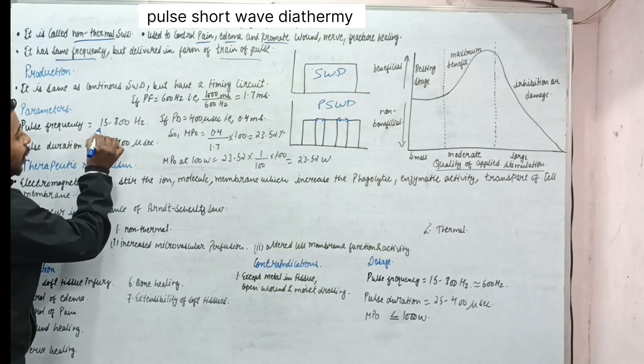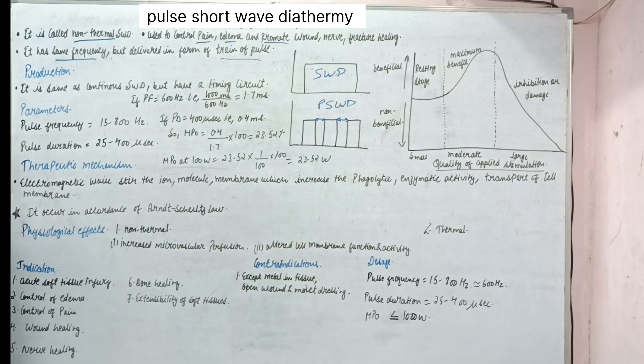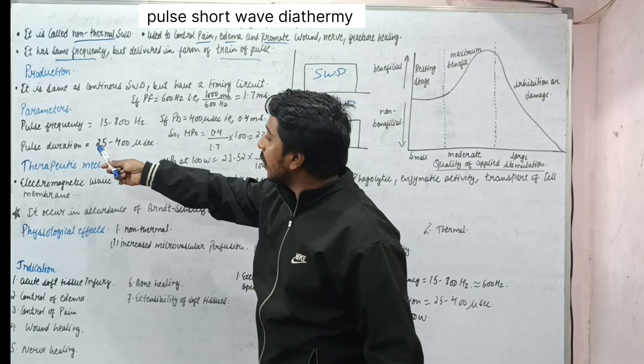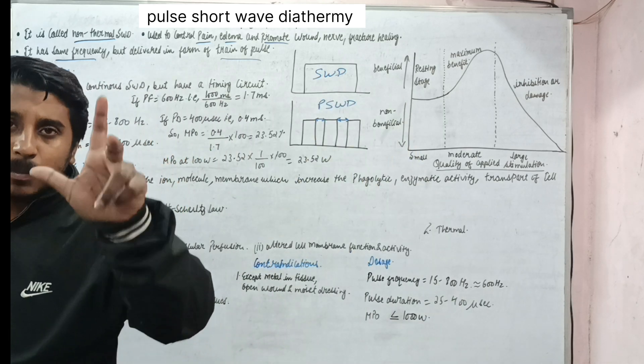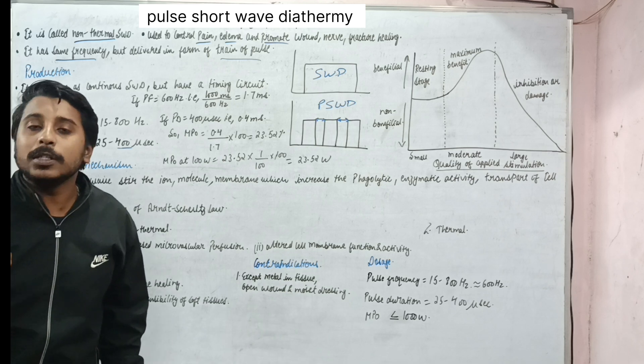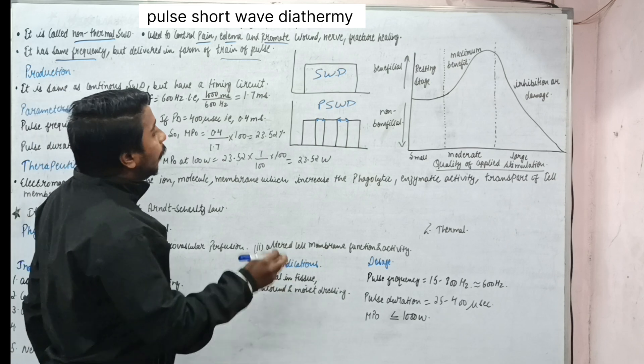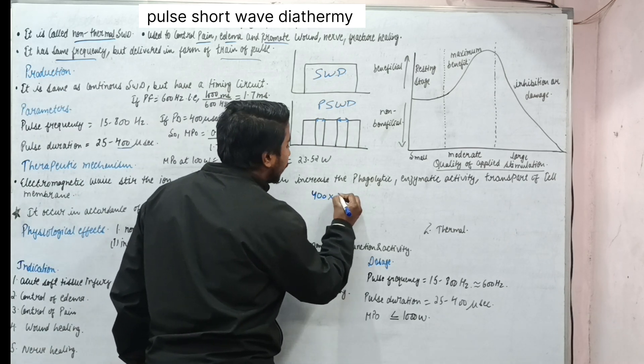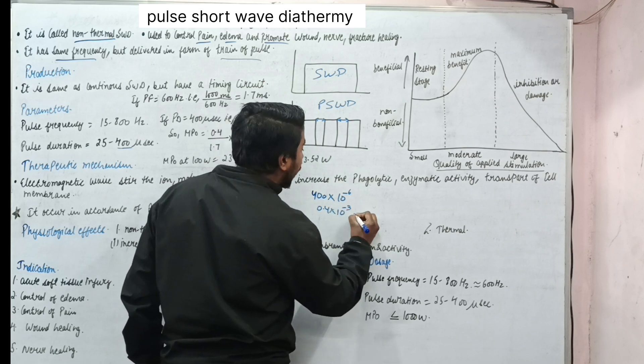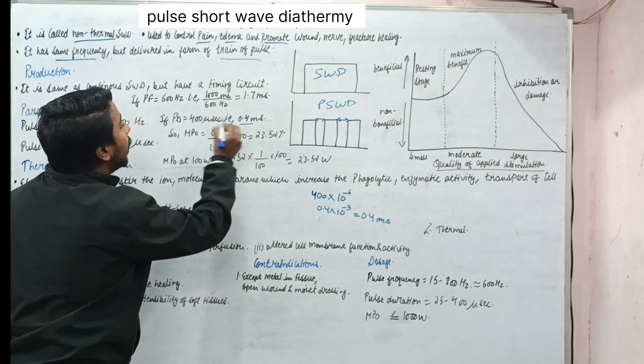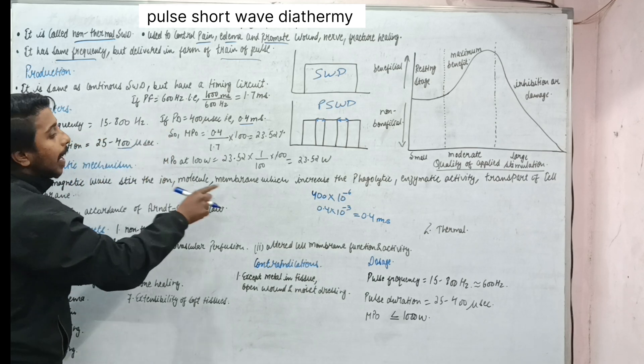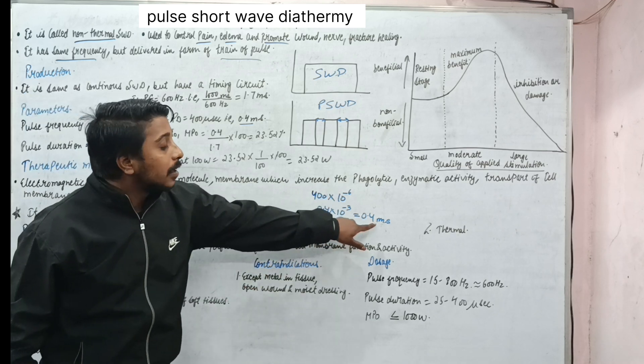Now, parameters. Pulse frequency is 15 to 800 hertz. Pulse duration is 25 to 400 microseconds. Please just focus for 2 to 3 minutes, rest all is very easy. Now we have some small calculation. If pulse duration is 400 microseconds, let us say I choose pulse duration as 400 microseconds. 400 microseconds means 10 to the power minus 6. So I can write it as 0.4 into 10 to the power minus 3 which will become 0.4 millisecond.